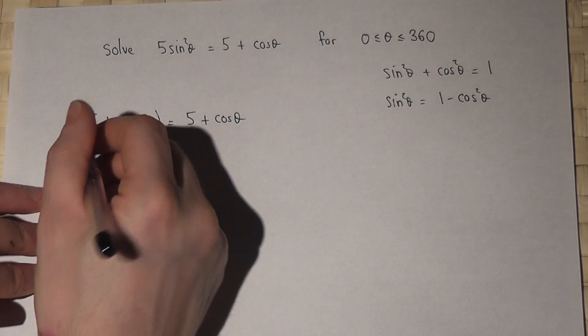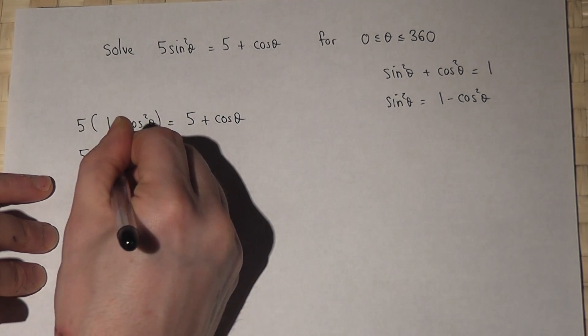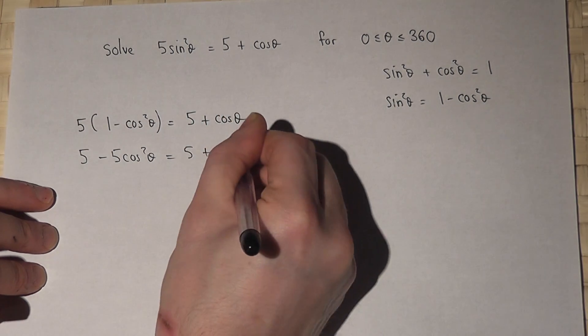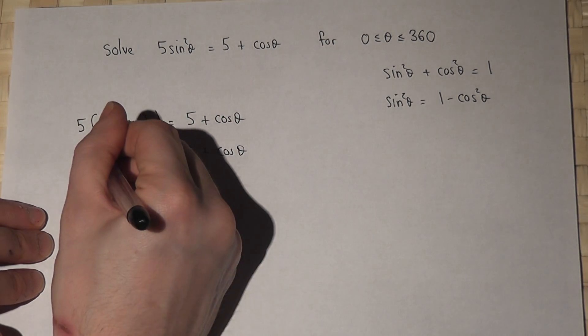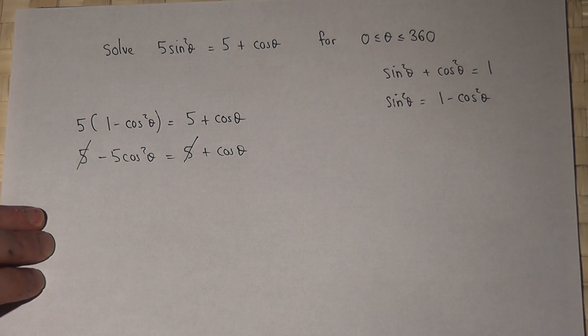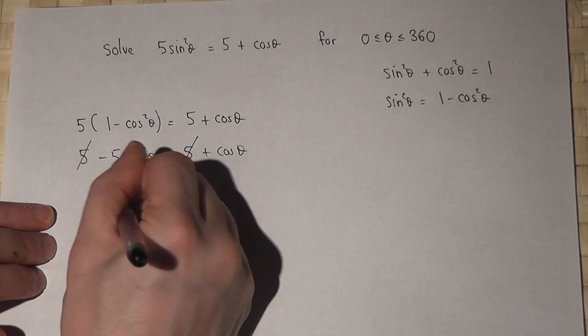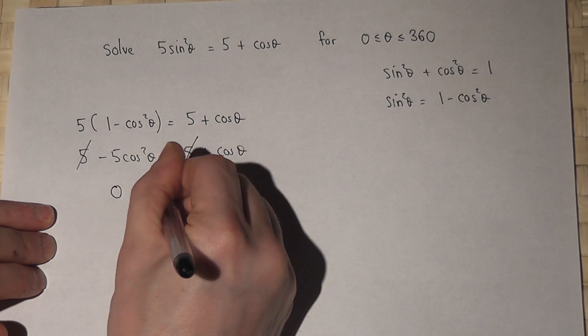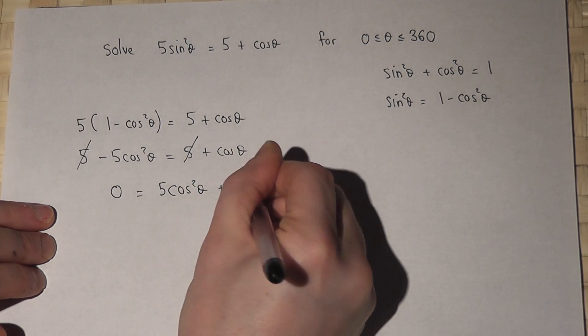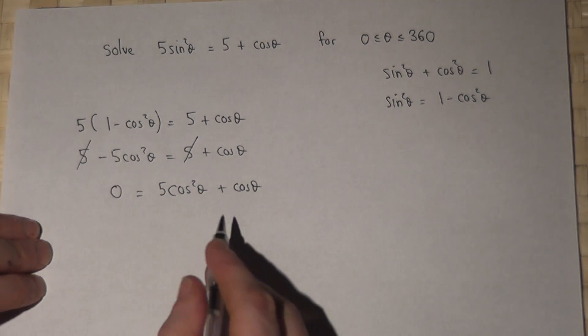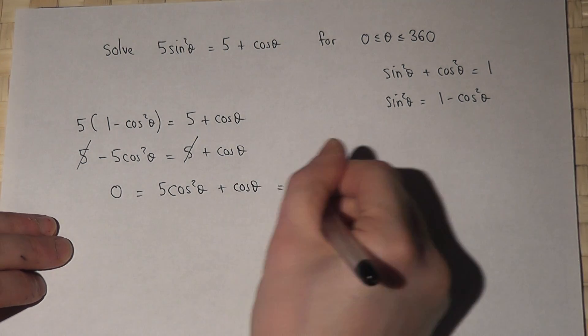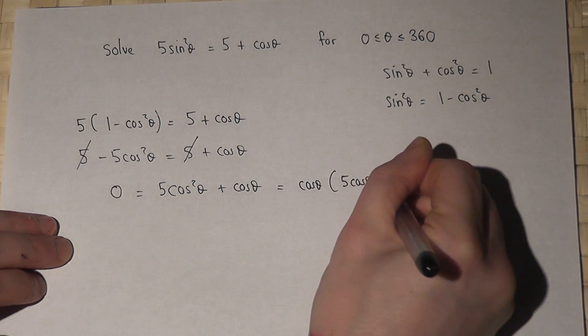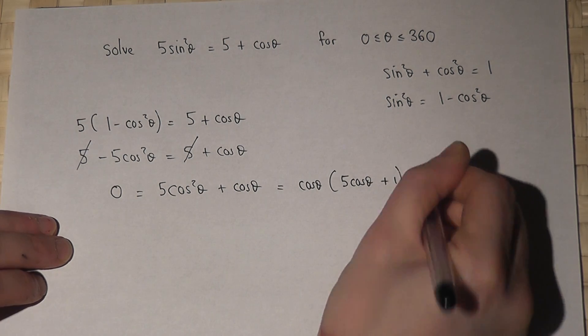If I expand the bracket, 5 minus 5 cosine squared theta equals 5 plus cosine theta. The 5's cancel out. If I then add across the 5 cosine squared theta, I get 0 equals 5 cosine squared theta plus cosine theta. This can then be factorized to cosine theta times 5 cosine theta plus 1 equals 0.